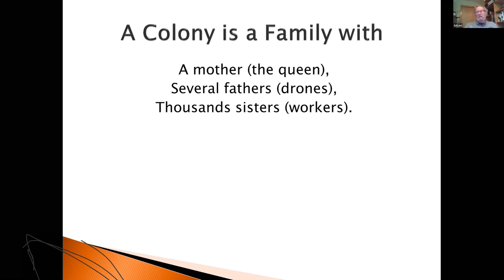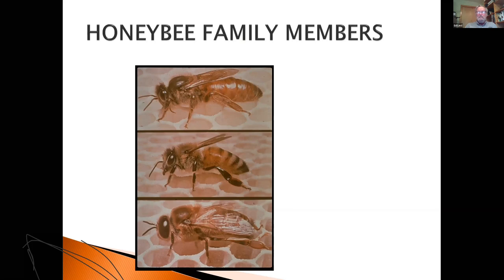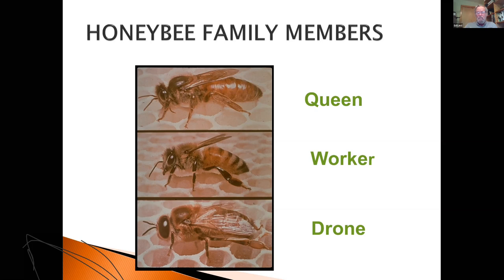A colony is a family. It has a mother — the queen bee, mostly just one. It has several fathers, which we call drones — the male bees. And it has thousands of sisters, which we call workers. The queen is the largest. The drone is the fattest. The workers all look the same, though sometimes they'll have variations in color. Different subspecies will have other variations.